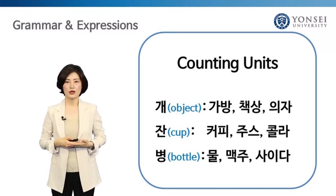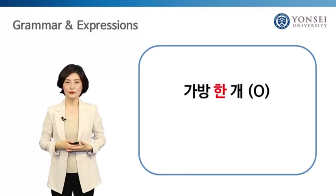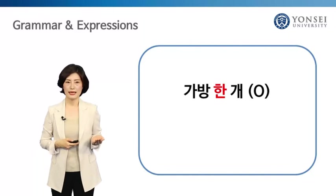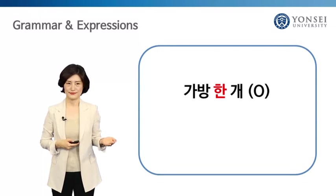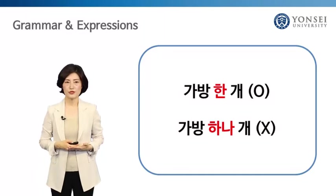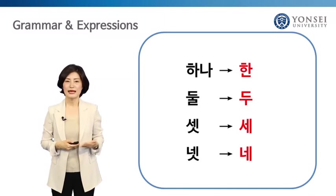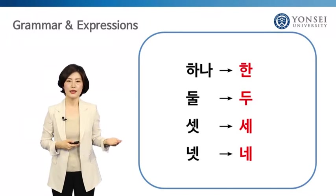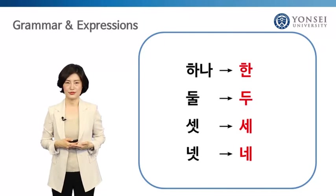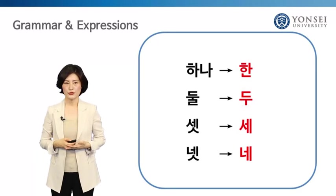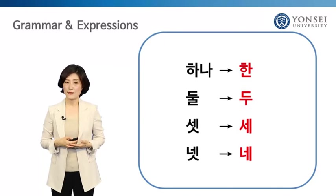These counting units are used alongside numerals. For example, if you want to say 'one bag' in Korean, we need the word 가방, meaning bag, 한, which means one, and the counting unit 개. Altogether, we say 가방 한 개. We have to be careful: 가방 하나 개 is wrong. The numbers 하나, 둘, 셋, and 넷 each change to 한, 두, 세, and 네 when used as numerical determiners. So it's 가방 한 개. Also, pay attention to word order — it's not 한 개 가방, you should say 가방 한 개.